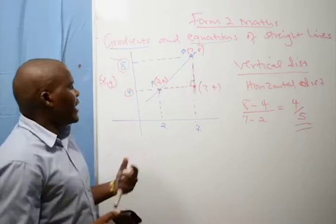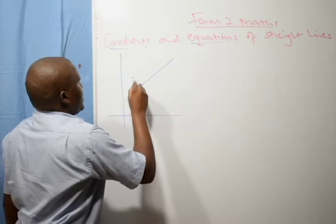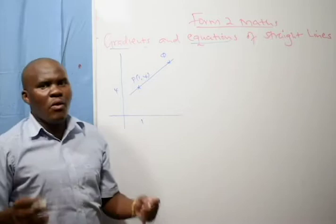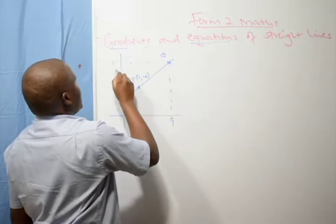The first line that we can have in any question is a line that goes upward like the one we just looked at. We can take point P as (1, 4) and point Q as (9, 8). Remember, that is how we read coordinates — X, Y — so it is (1, 4) and (9, 8).